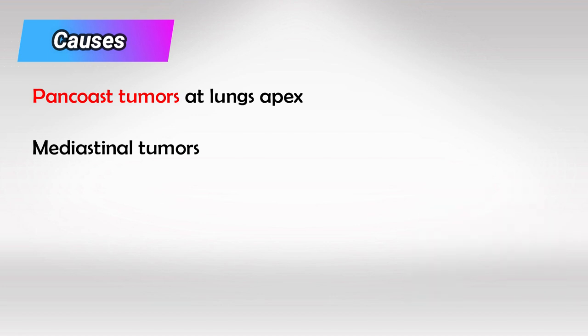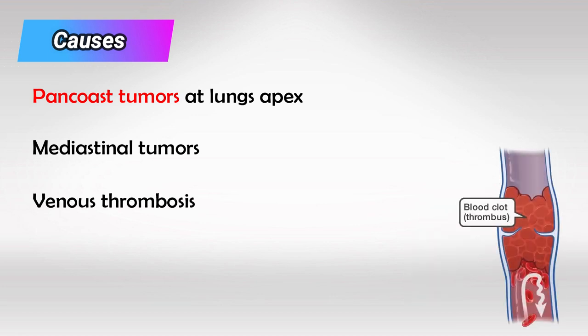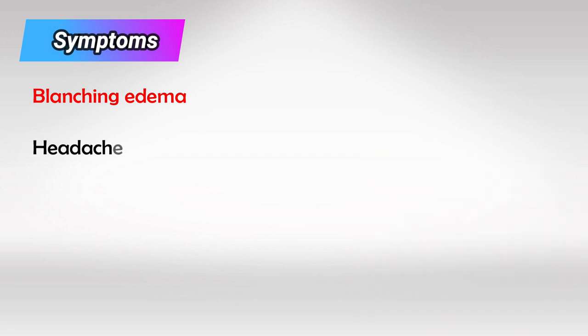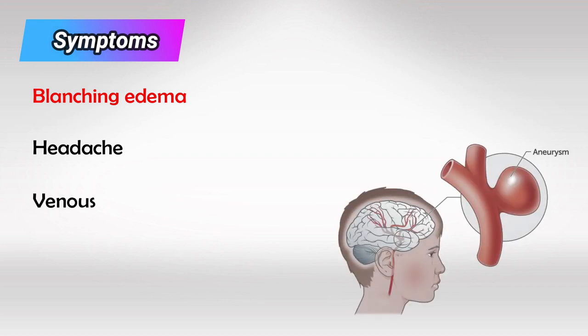Other causes include thrombosis of the vein, especially if there was a catheter inserted. The main symptoms we see, as mentioned, are edema which blanches after we press on it, headache, and confusion due to compression of the brain, and in fatal cases, aneurysms or aneurysm rupture.